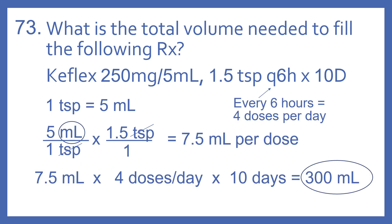So 1 teaspoon equals 5 milliliters. For 1.5 teaspoons, it would be 5 mL per 1 teaspoon times 1.5 teaspoons, which equals 7.5 milliliters per dose. We're having that every 6 hours, so there are 4 doses per day — 24 hours in a day divided by 6 equals 4 doses per day.